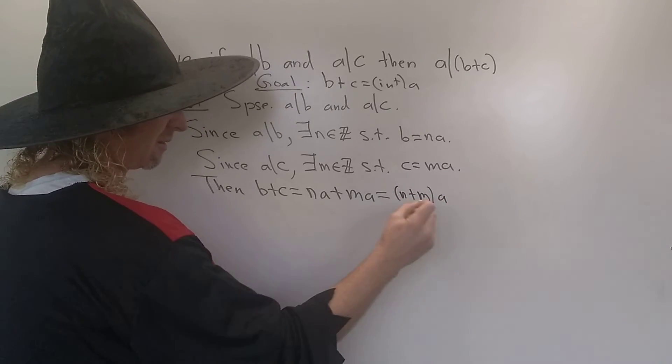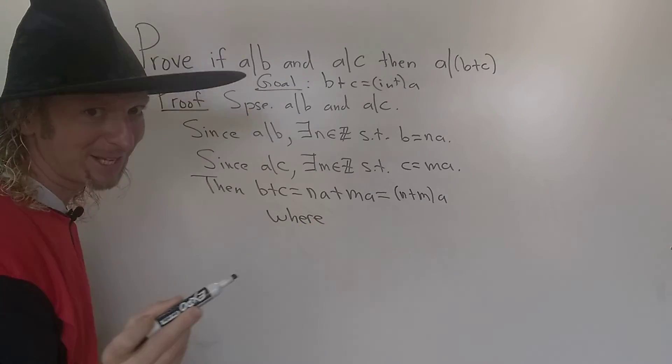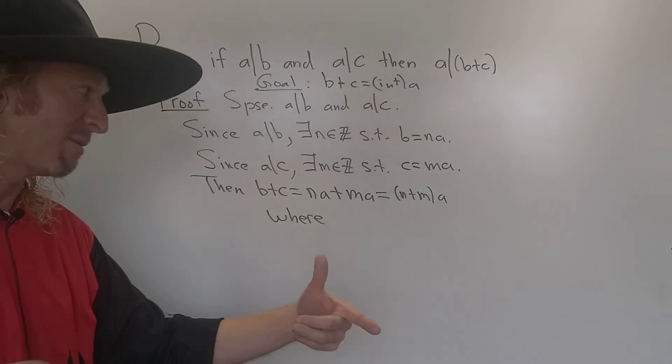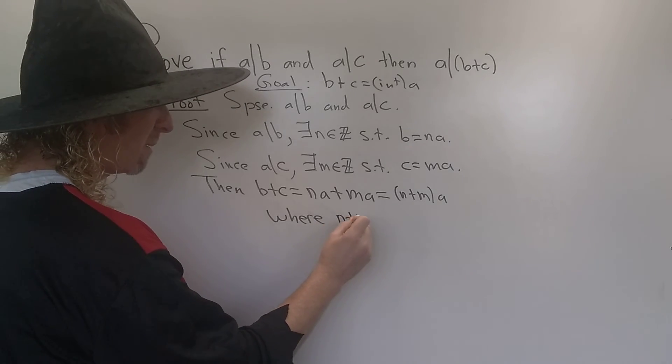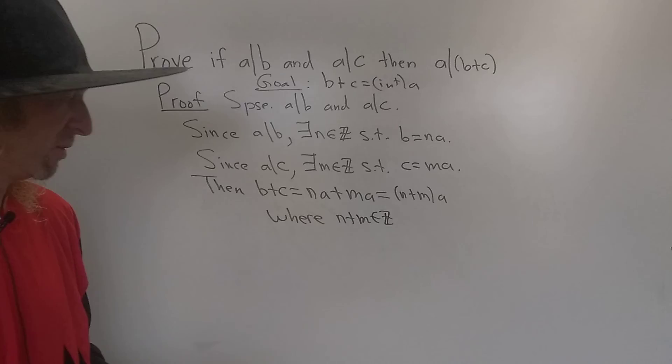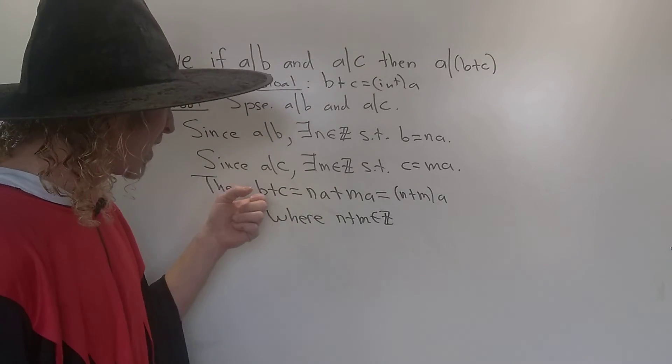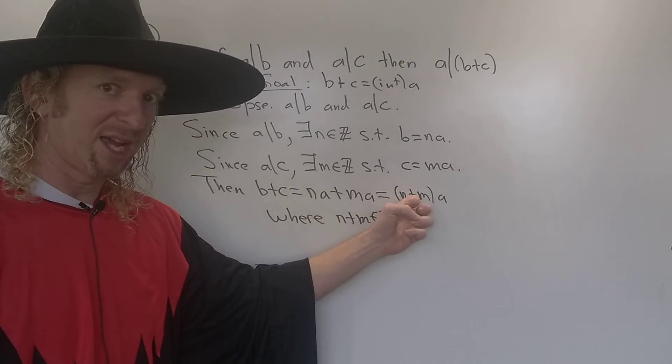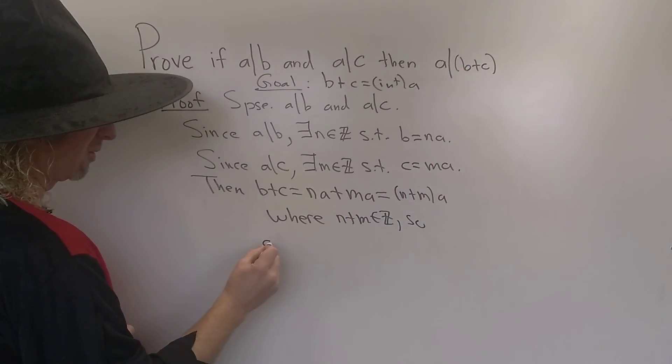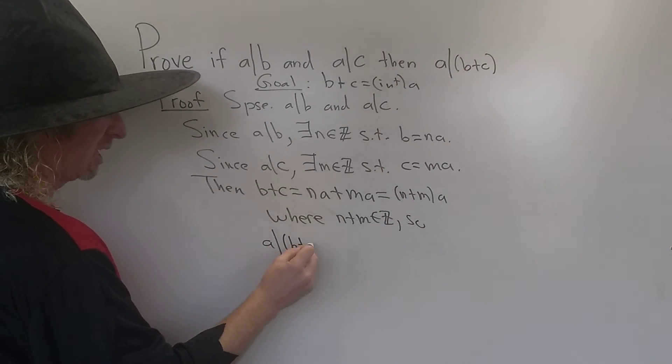Where we know something special about N plus M. It's an integer because N is an integer, M is an integer, therefore N plus M is an integer. So N plus M is an integer because integers are closed under addition. That's the word people use, closed. So we have B plus C is an integer times A. That's precisely the assertion that A divides B plus C. So A divides B plus C. And that completes the proof.